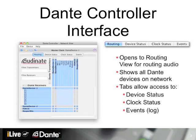Here we see Device Status, which allows us to see detailed information about each Dante device. Clock Status, which allows us to see and adjust clock settings for the Dante network. And Events, a log of changes and warnings.